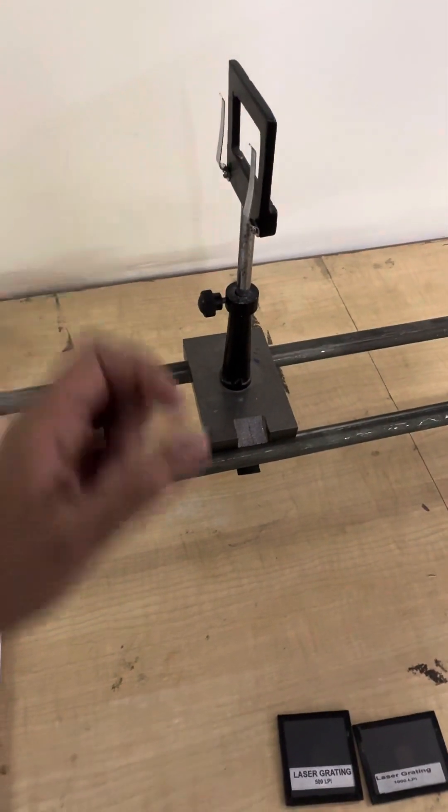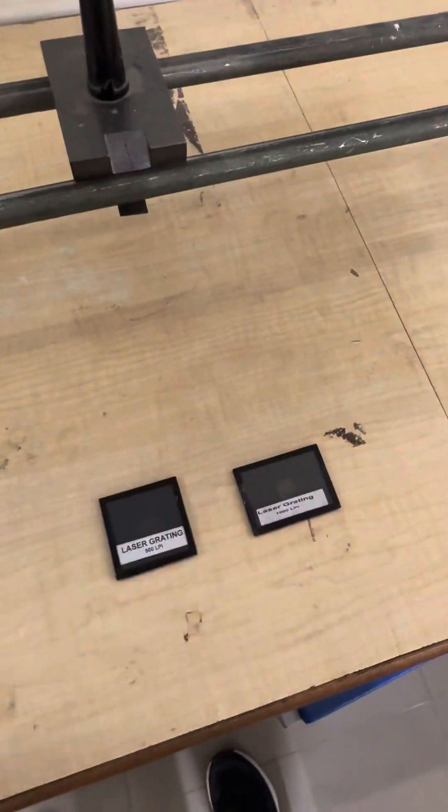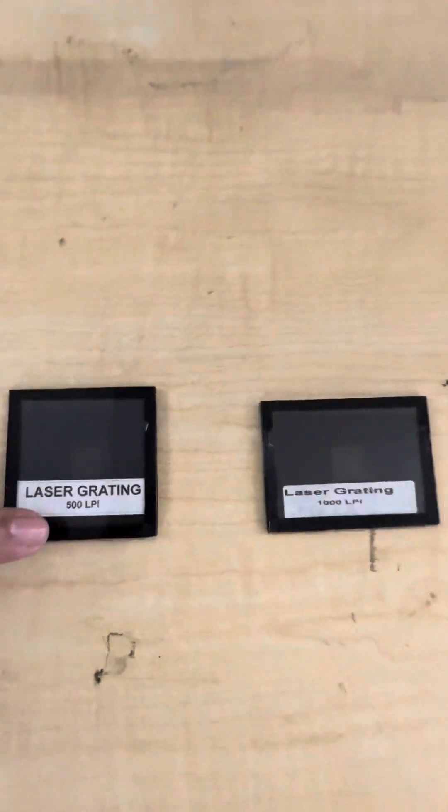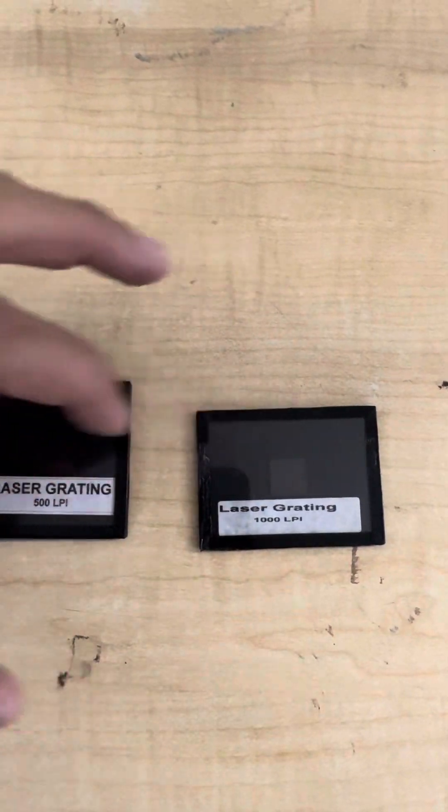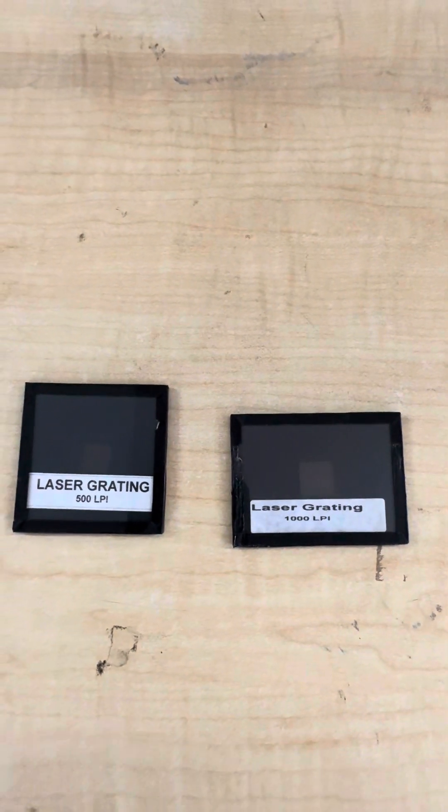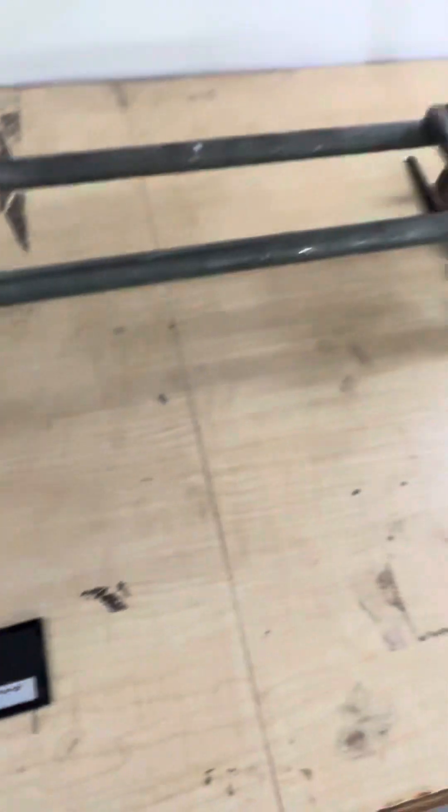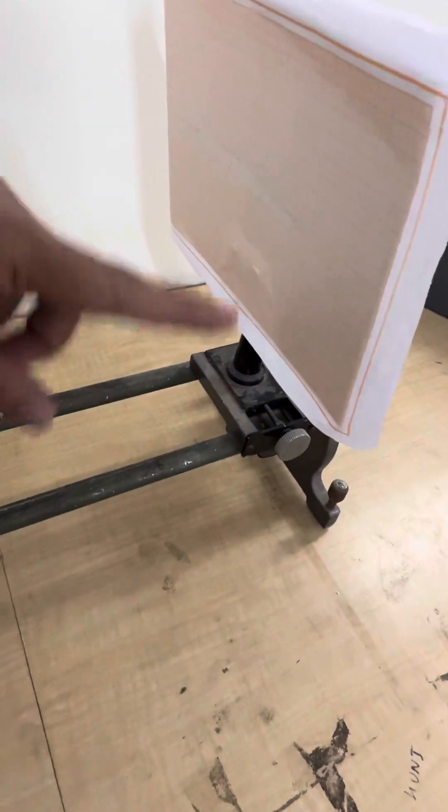Then we require a grating element. The grating element will be placed on this side. Grating element is of two types: one is 500 LPI, another one is 1000 LPI. Grating element can be any of these two in your examination. And there is one screen in which we will see the diffraction grating.